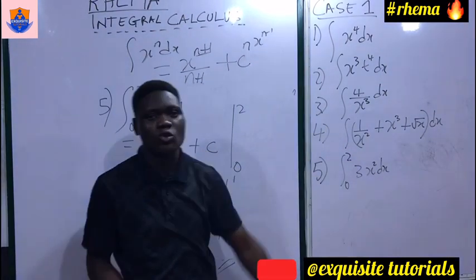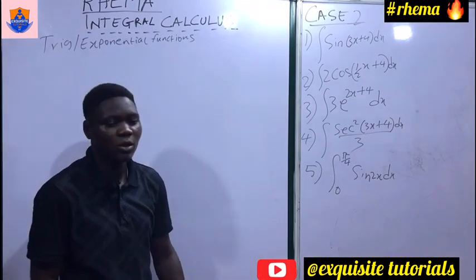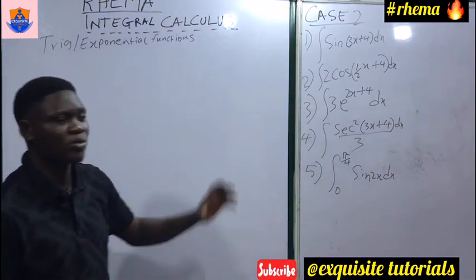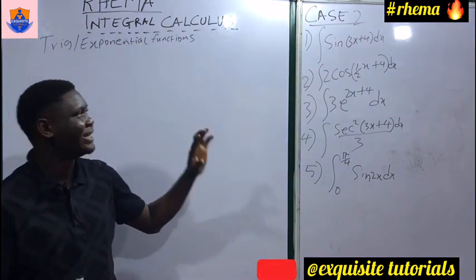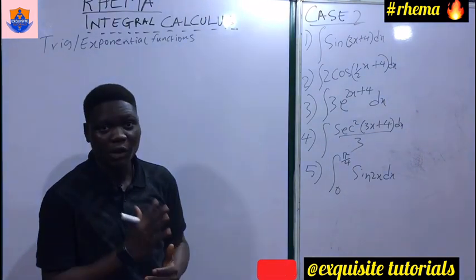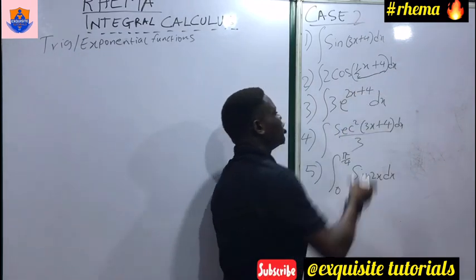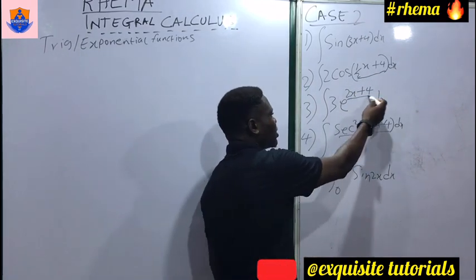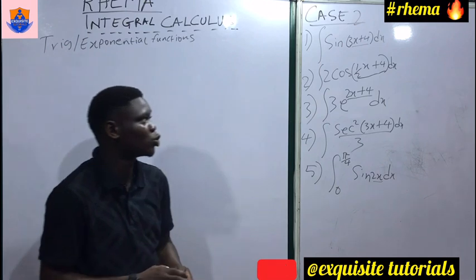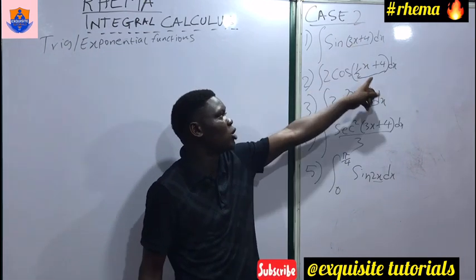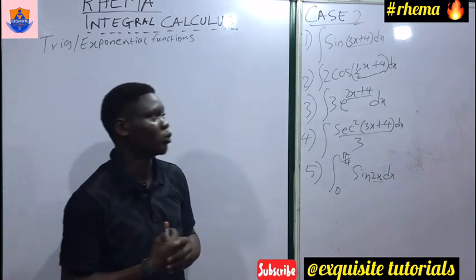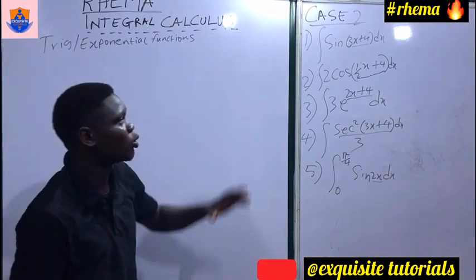That's all for Case 1. Let's move to Case 2 of integral calculus, dealing with trigonometric and exponential functions. First, a note on linear functions: any function where the power of x is 1 is a linear function. The same applies to functions like 3x plus 4, 2x minus 1, and so on. When you plot a linear function it gives a straight line; if the power were 2, it would be quadratic.